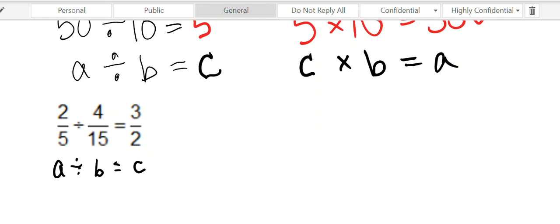So if we're going to take that same pattern and go back and check our answer by multiplying by the divisor to see if we get to the dividend, then we would end up with 3 over 2 times 4 fifteenths. So how does that get me back to 2 fifths?